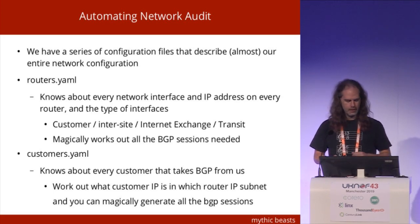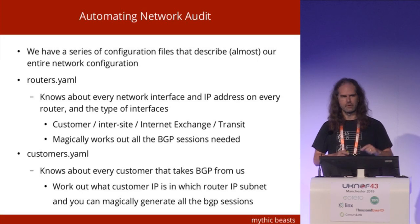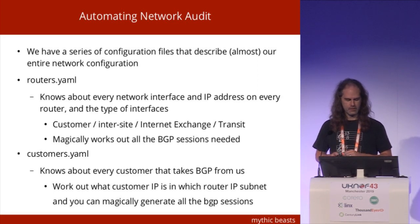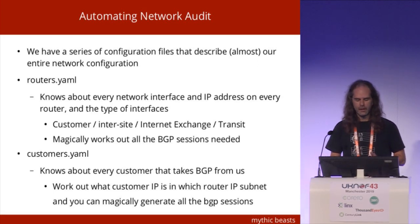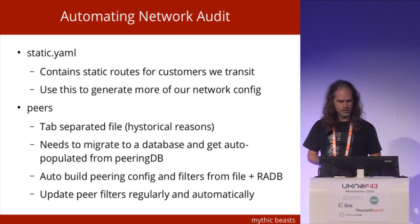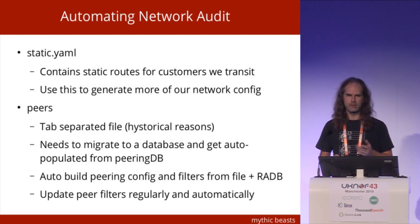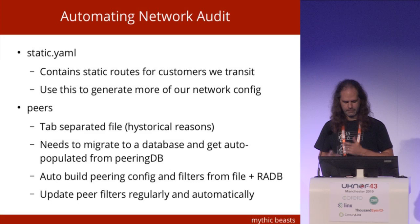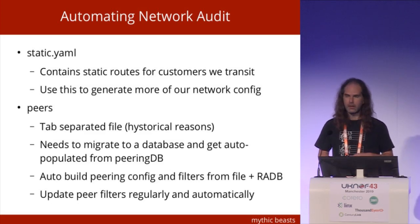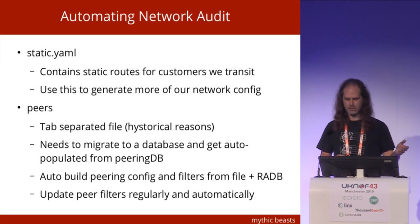Combine those two together: if you spot you've got a customer IP that sits in an IP address that's on the router, they can talk to each other over a direct link — you can magically generate all of your sessions that you need. We also have a file called static for customers with statically routed routes, and a file called peers — which for hysterical reasons is a tab-separated file, which is not a format I recommend. That could really do with going into a database, pre-populated directly from PeeringDB. From that, you can just run a command for a peer, and it will build all the config for every network exchange they're on, and build an up-to-date set of prefix filters. All of our filter lists keep getting updated without anybody actually having to do anything.